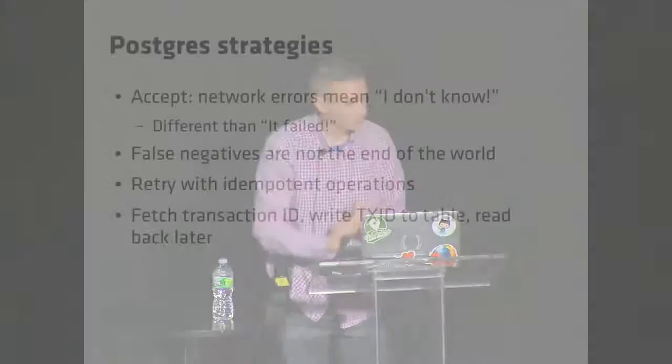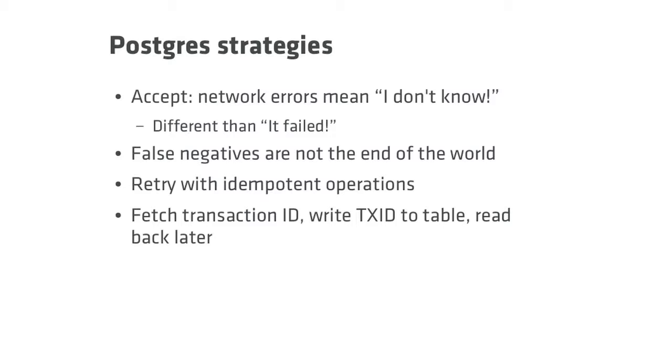The real answer is that it's not really a failure. A network partition or IO exception means you don't know what happened — it doesn't mean it failed. It just means it might have succeeded or might not have. In practice, false negatives are not as bad as false positives. If you drop data that's really bad; if you have extra data that's usually better. A lot of times your operations are idempotent. Because Postgres has really strong consistency, you can just retry cleanly. If you want to be really strong, you can fetch the transaction ID, write it to a table, and check for its presence later.